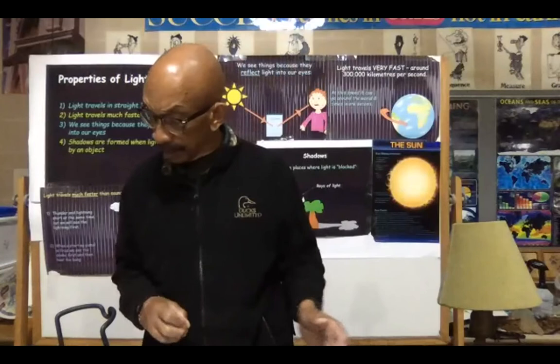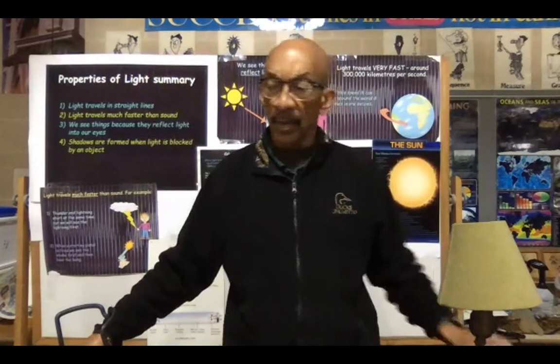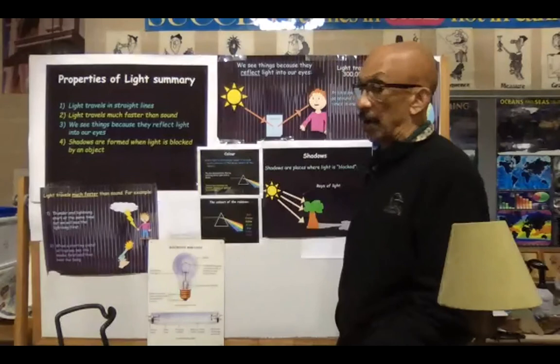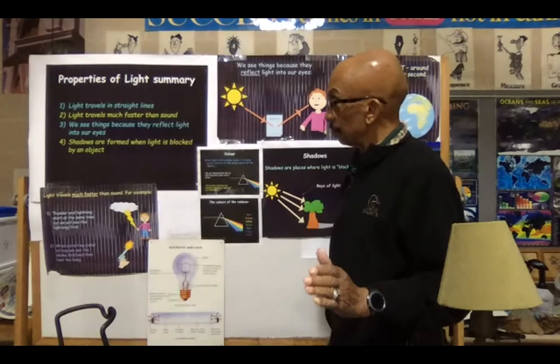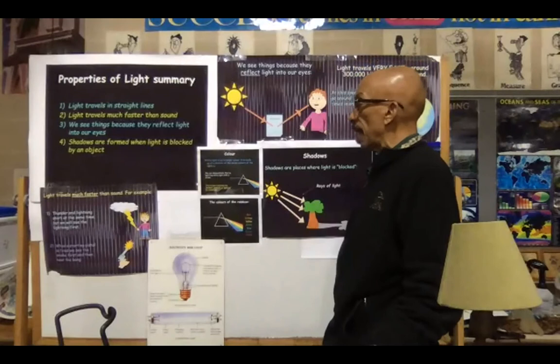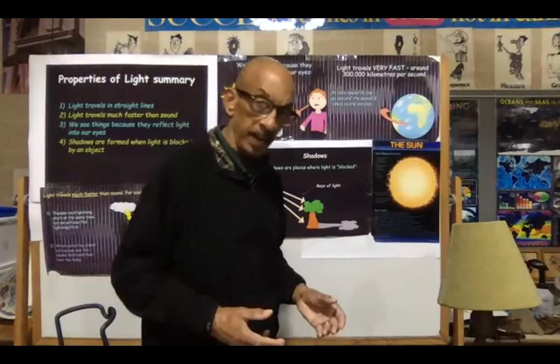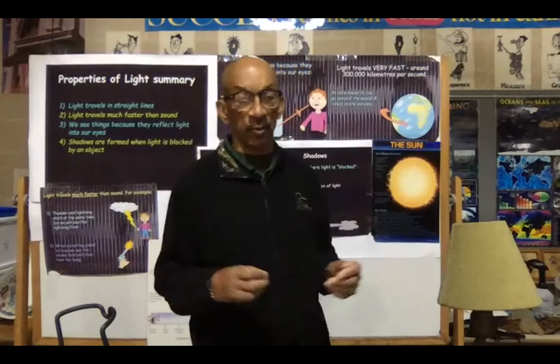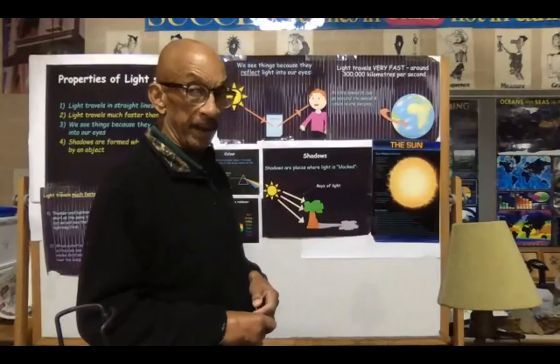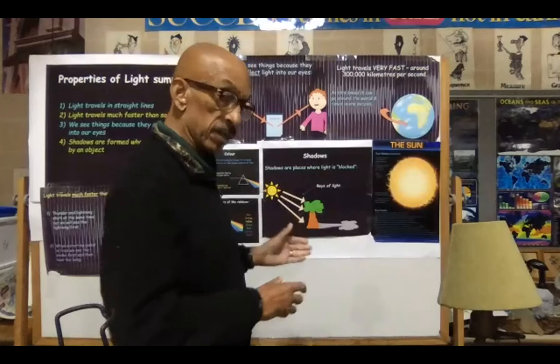The properties of light: light travels in straight lines, light travels much faster than sound, we see things because they reflect light into our eyes, and shadows are created when light is blocked. For example, if we were on a nature trail on a hot day and took a break on the backside of a tree — on the side casting a shadow — the tree is blocking those light waves, creating a shadow on the other side.